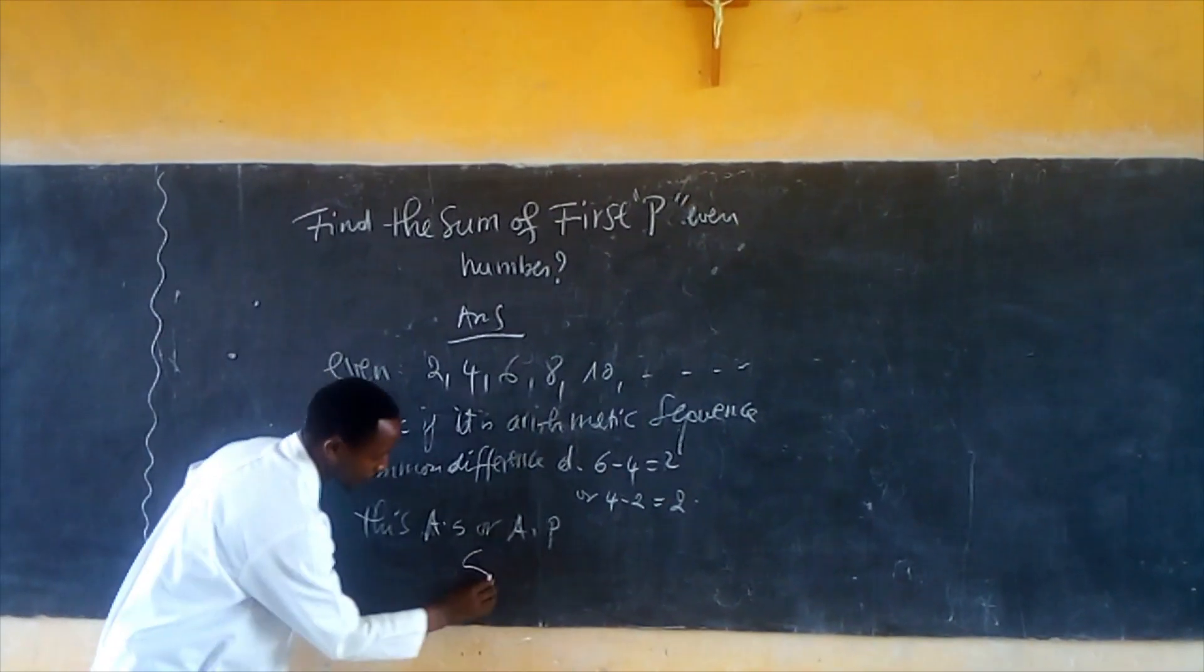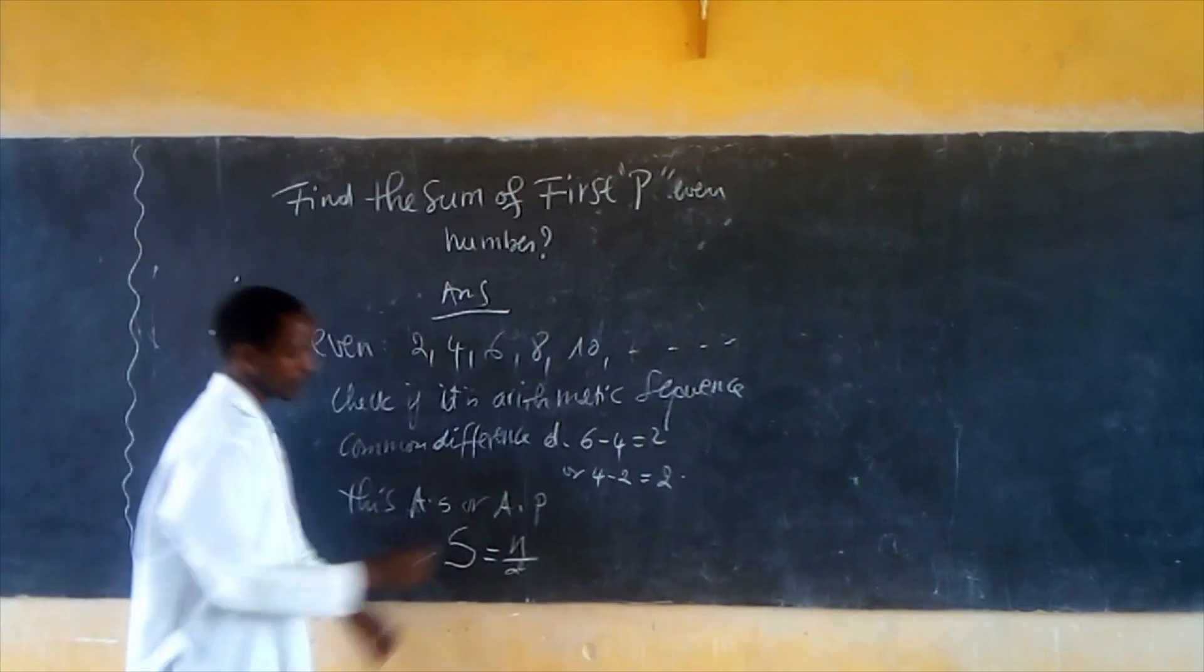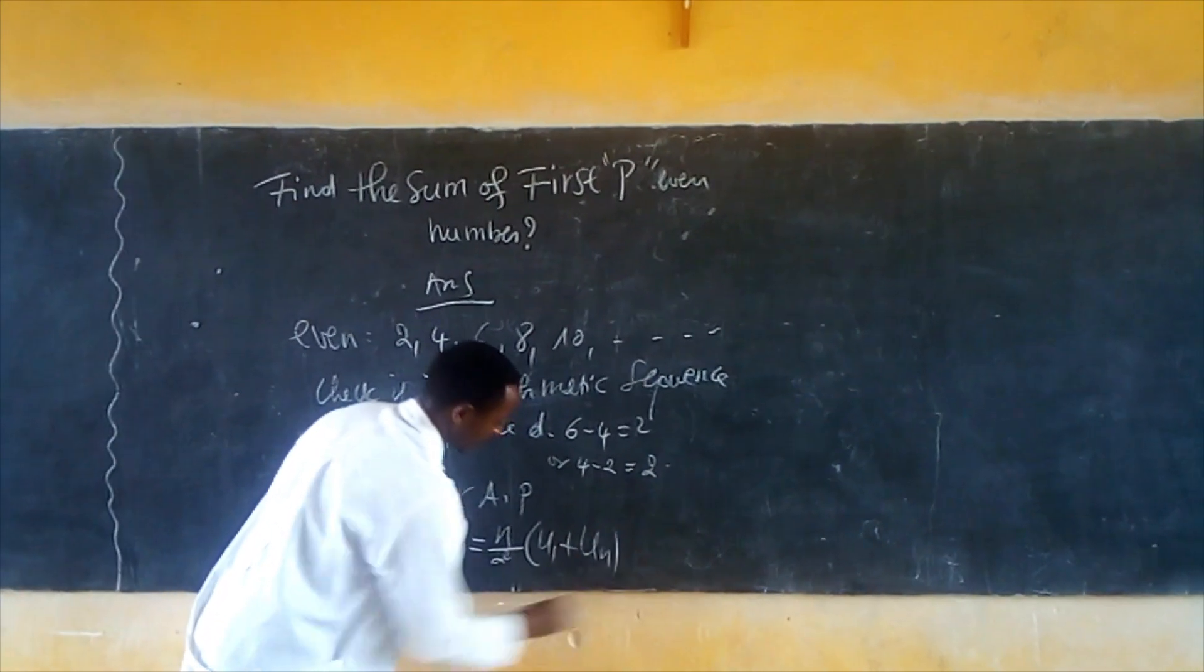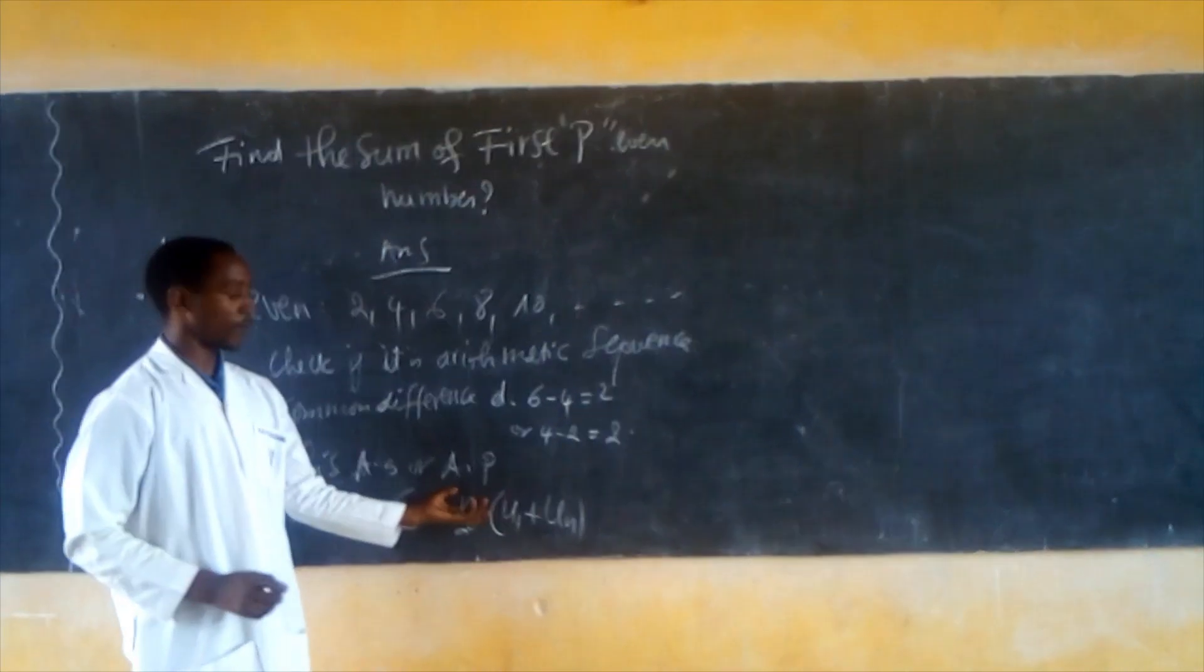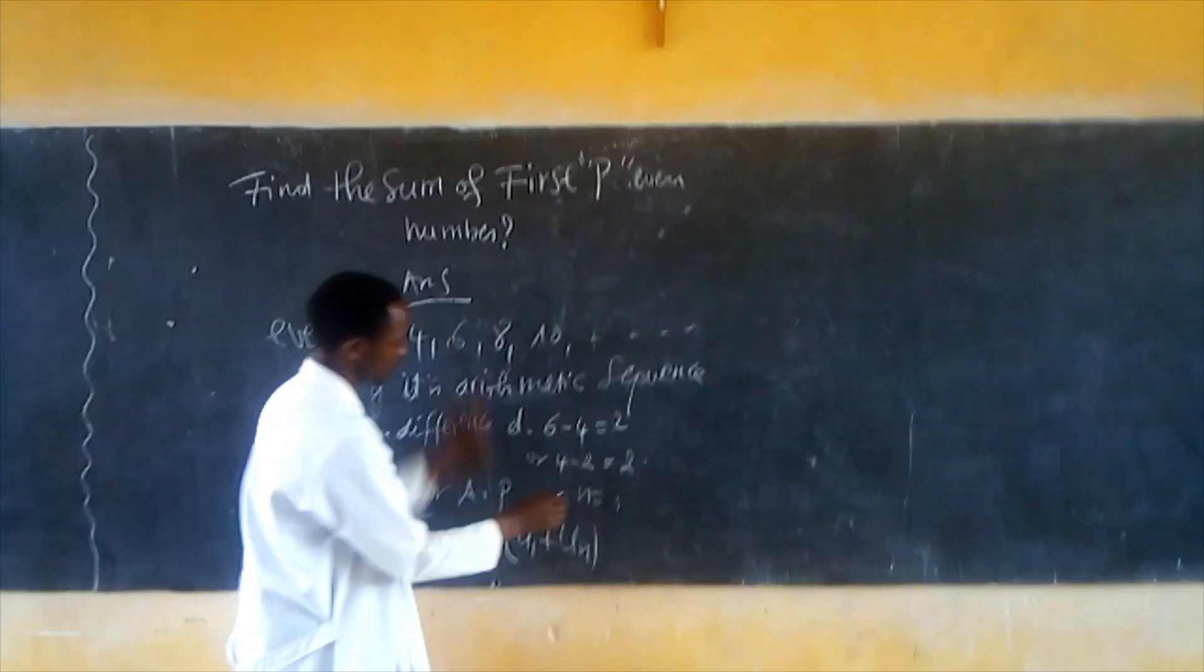The sum is given by the formula n over 2 times (U1 plus Un). Now I'm going to do this.